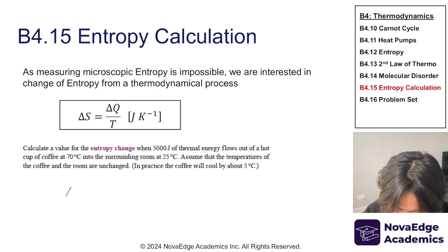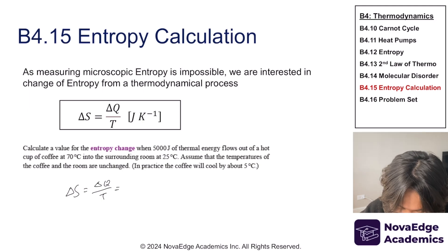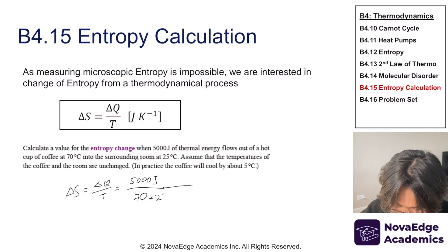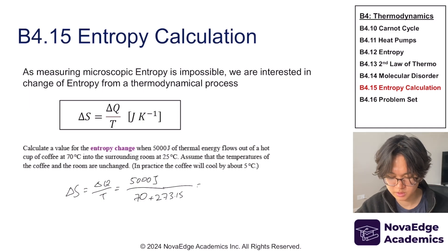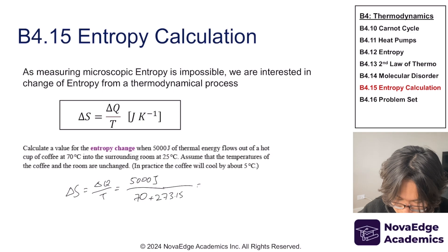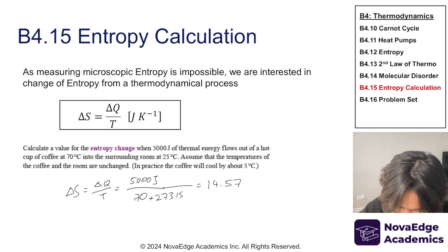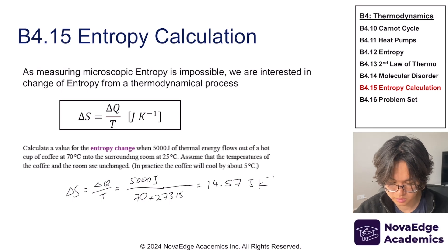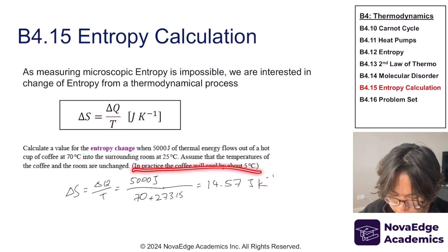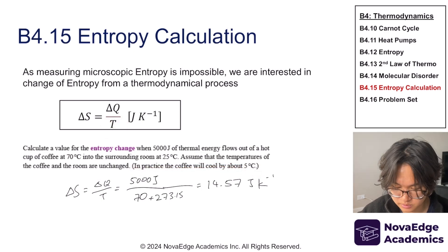Let's use that equation to solve a problem — pause and give it a try. The coffee is losing 5,000 joules at a temperature of 70°C. Change in entropy equals delta Q over T, which is 5,000 divided by (70 + 273.15). Always convert to Kelvin. That gives 14.57 joules per kelvin. One assumption here is that the temperature doesn't change, though in practice the coffee would cool by about five degrees Celsius from losing 5,000 joules.